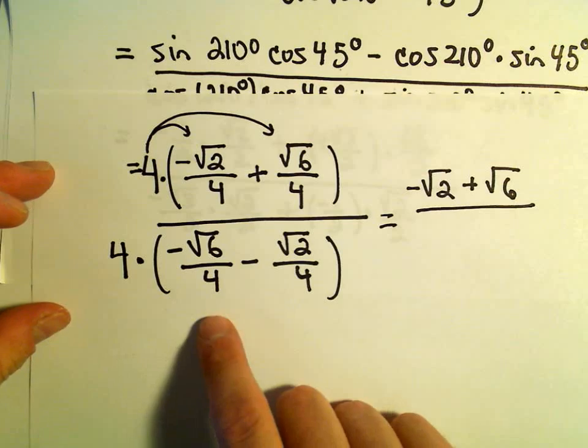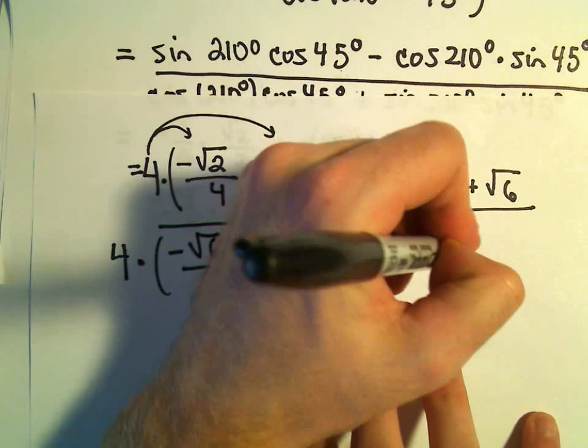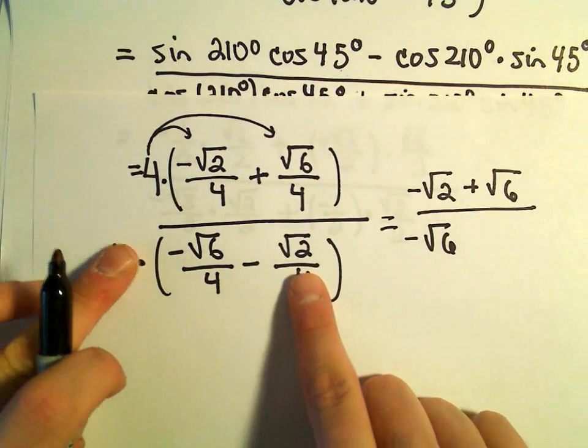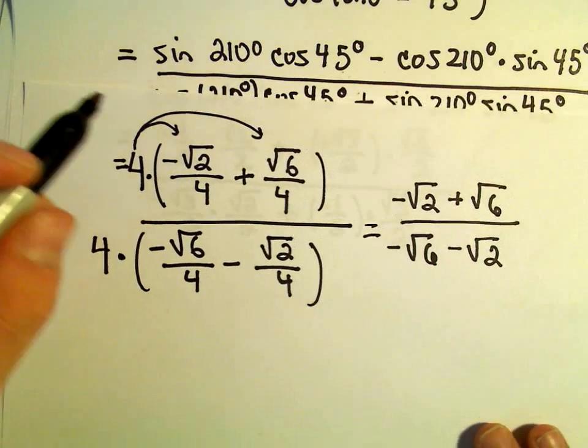In the denominator, the same thing. If we distribute the 4, we'll get negative root 6. The 4s will cancel. And it looks like we'll have negative root 2. And to me, this is probably where I would leave it.